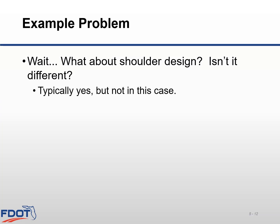You might wonder whether the paved shoulder should have a different pavement design — the answer is usually yes. However, in this particular situation of only widening the travel lane by 1 foot, we decided to use the same pavement design for the adjacent paved shoulder as well. This makes the construction of the total widening much simpler. This way, the new base can be constructed as a single effort and the paving of the 12-foot travel lane and the 5-foot shoulder can all be done at the same time.